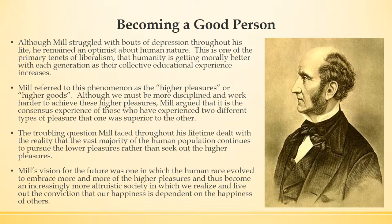For example, a movie made for nothing other than a cash cow at the box office — like Transformers Part 7 or 8 — will bring in a lot of money because of its entertainment value with all the special effects, even if it's not a very good script. But you'll rarely see a movie like that nominated for a critical award like an Academy Award or a Golden Globe. Those movies tend to have a much more artistic value. Mill actually used the example of music — that a classical piece of music will be much more appreciated as the higher pleasure or the higher good.